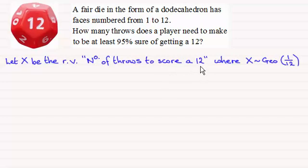Now if we let n be the critical value, the least number of throws needed, then we've got that the probability of X being less than or equal to n has to be greater than 0.95.